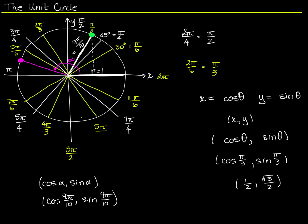Since 9 pi over 10 is not one of my friendly angles, I'm going to have to use my calculator, and I need to make sure it's in radian mode. I'm using a TI-84. I select radians — it was in degrees from earlier problems. Now I'm back on my home screen and I can see at the top that I'm in radians. I type in cosine of 9 pi over 10 and get negative 0.951. Then the sine of 9 pi over 10 is positive 0.309.